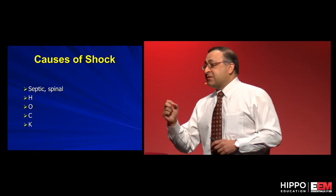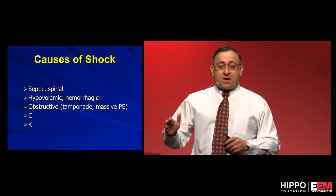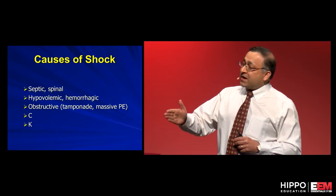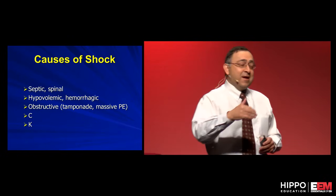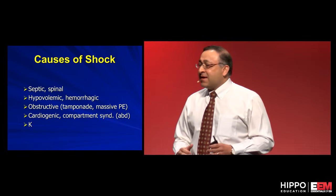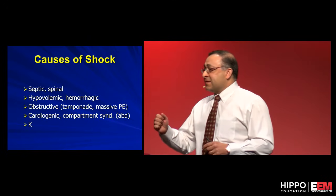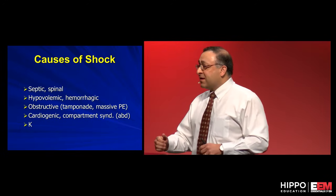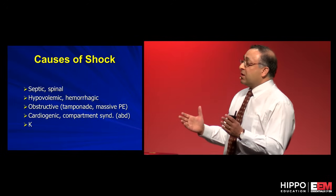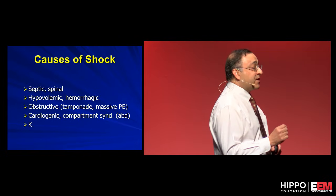S stands for septic and spinal. H is hypovolemic and hemorrhagic. O is obstructive — tamponade and massive PE. Get that ultrasound out. You could add tension pneumothorax to obstructive as well, but you'll pick that up with your X-ray. C is cardiogenic and also compartment syndrome — abdominal compartment syndrome is an increasingly recognized cause of shock, especially in trauma patients getting large volumes of resuscitation.